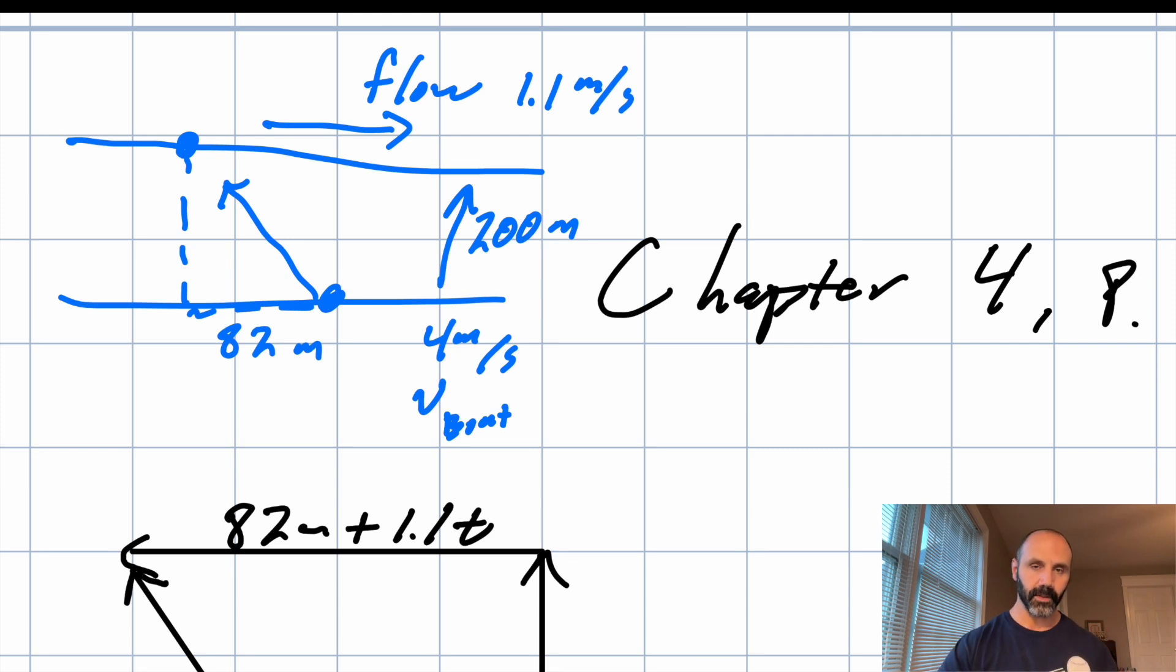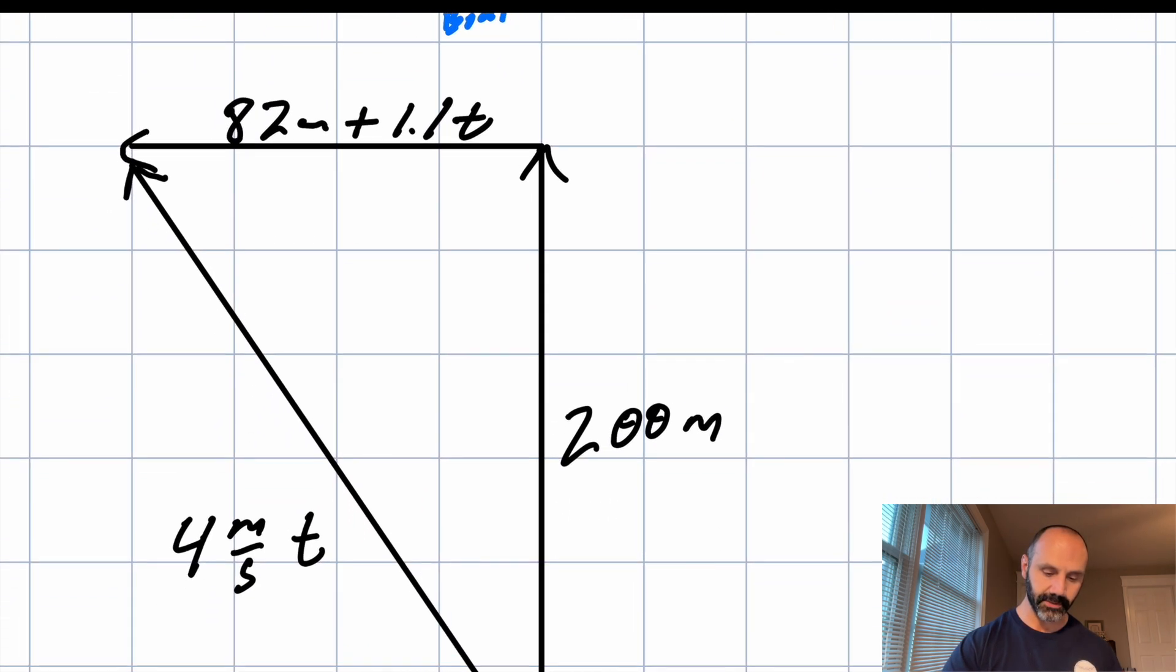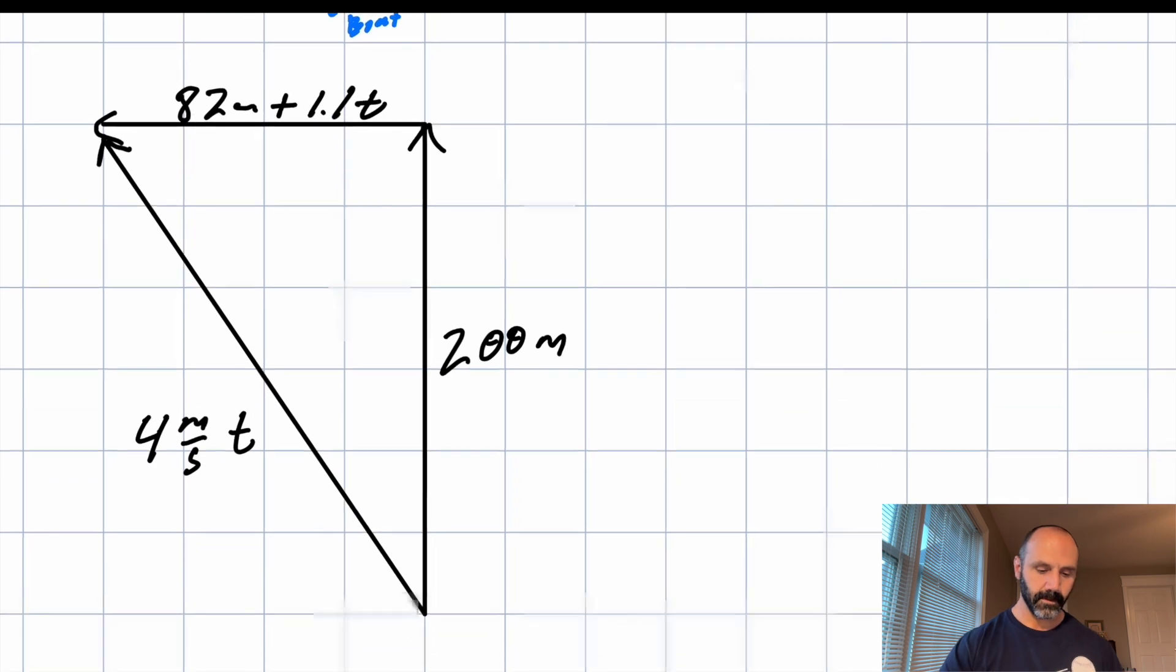The way I approach this problem, and I think there's more than one solution to this, but the way that I approach it is I drew a distance triangle based on the relative to the water, right? So this, it's 200 meters across. So that was easy to draw, right? Now upstream, I know I have to go 82 meters upstream plus the velocity. So plus the distance, the extra distance that the river has gone past the boat. And so that's expressed.